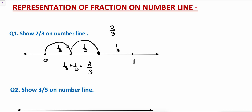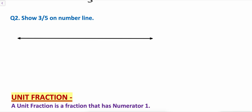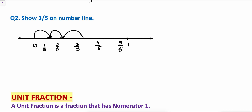Let's take one more example: 3 by 5 on a number line. Suppose this is 0 and this is 1, divided into 5 equal parts. This portion will be 1 by 5, again this is 2 by 5, this is 3 by 5, this is 4 by 5, and this portion will be 5 by 5. Now we are talking about 3 by 5: this is 1 by 5, 2 by 5, 3 by 5. So this full portion is the 3 by 5 portion represented on a number line.